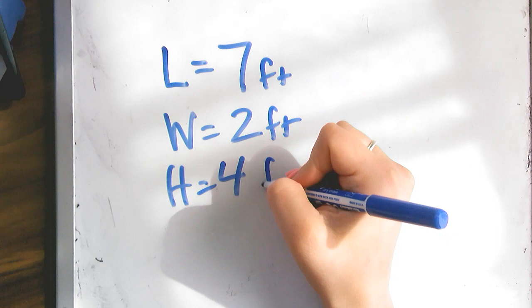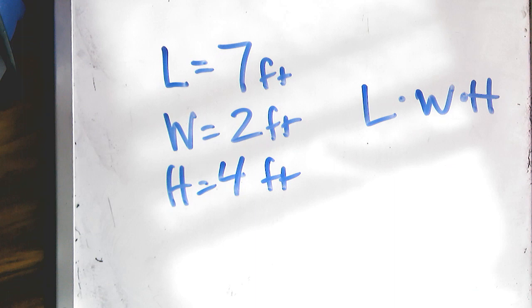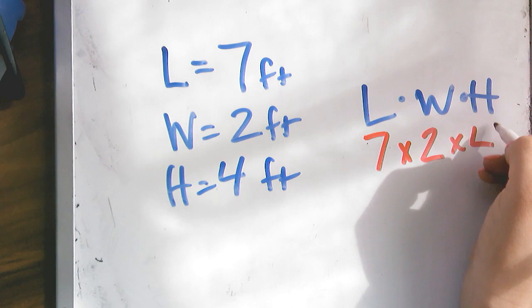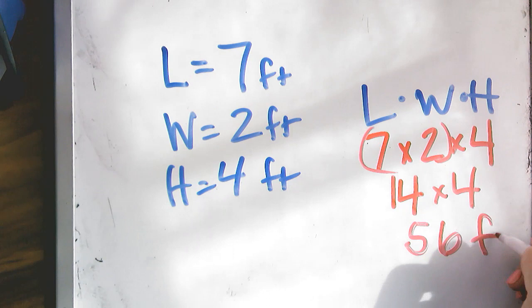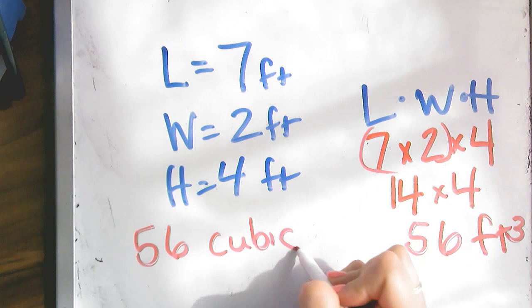You don't need to draw anything. You just need to put these numbers in. So we can go length times width times height. And we have a length of 7 times a width of 2 times a height of 4. So 7 times 2 is 14, and then we're going to times that by 4. So you get 56.